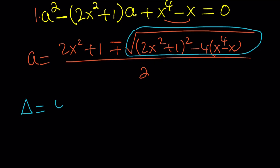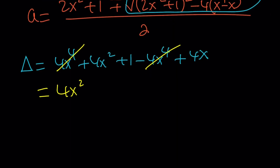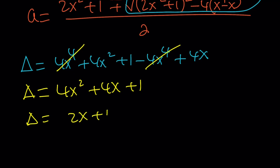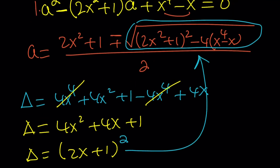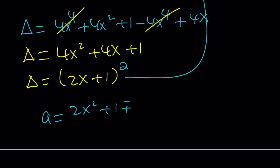Delta is going to be 4x to the fourth plus 4x squared plus 1 when expanded, minus 4x to the fourth plus 4x. The 4x to the fourth cancels out and we end up with 4x squared plus 4x plus 1, which you can write as a perfect square: (2x plus 1) squared. The discriminant is a perfect square, which means the solutions are going to be nice. Plugging this in, we get a equals (2x squared plus 1) plus or minus (2x plus 1), all divided by 2.